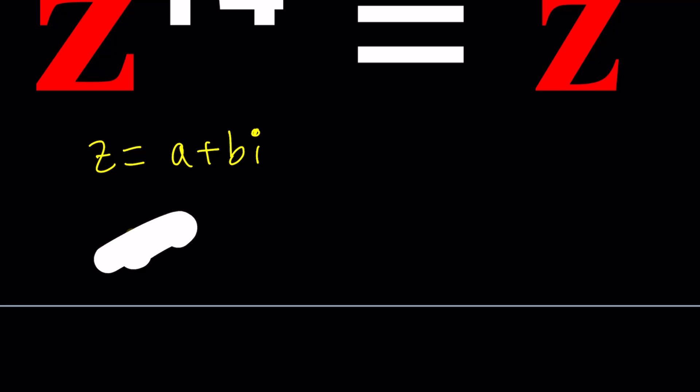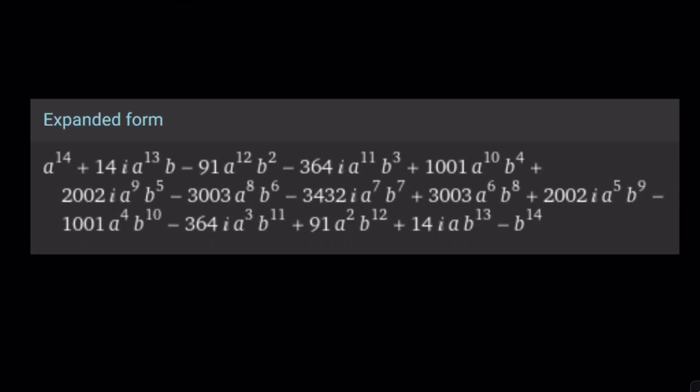Take A plus B I and raise it to the 14th power and good grief, that's going to give you 15 terms with the binomial theorem. But don't worry, Wolfram Alpha did it for you and this is what you get as the expanded form. And of course, this is supposed to equal z bar, which is A minus B I. And then from here, you can set the real parts and equate the imaginary parts.